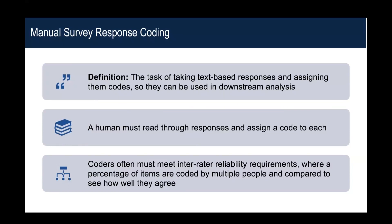Depending on how complicated the categories are or the requirements for the survey, there are also inter-rater reliability requirements — the idea that coders need to be thinking of the labels or the codes in the same way, and you want consistency between coders. This means not only do you need to label all this text, but you also often need to have several people label the same text, which increases how much actually needs to be done.